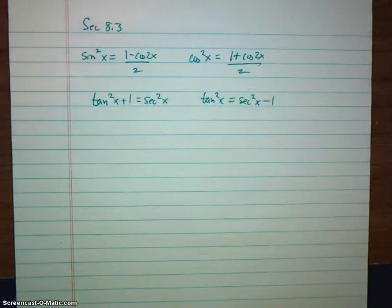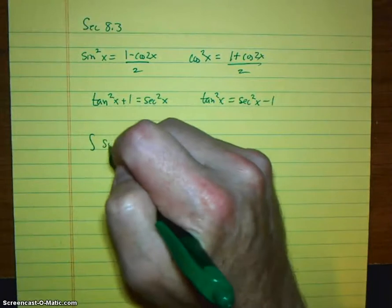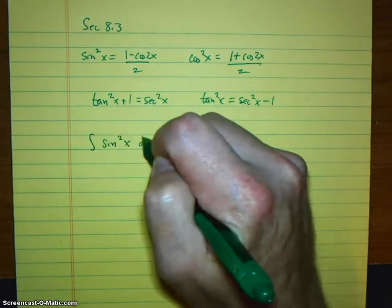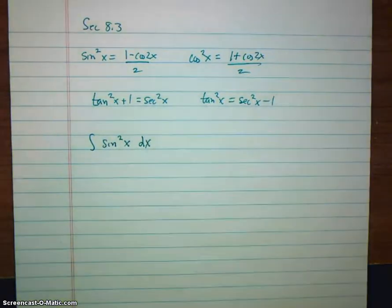Alright, so we're still in section 8.3. In class the other day, we talked about what to do if you had sines and cosines and one of them had an odd power. Well, what do you do if you have something like this, integral sine squared x dx, where you only have even powers?